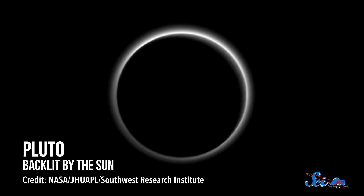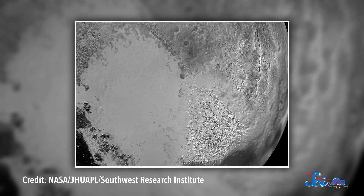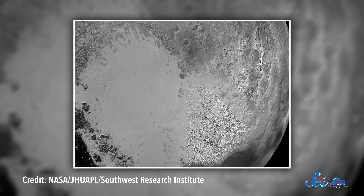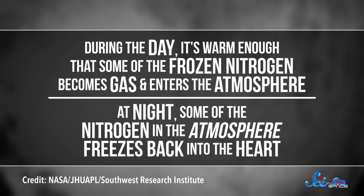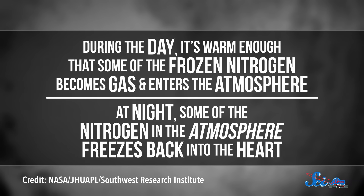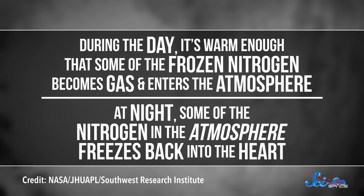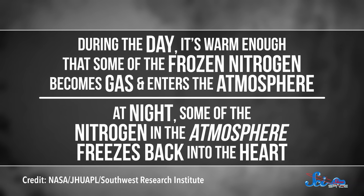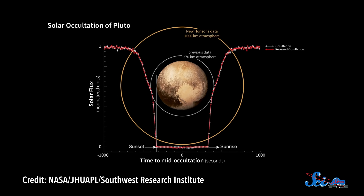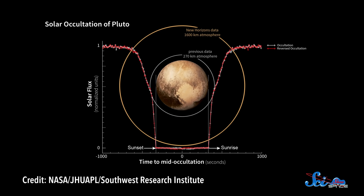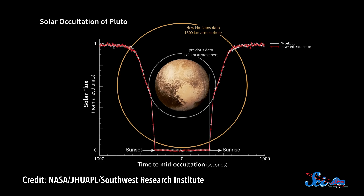Pluto's atmosphere is almost entirely nitrogen, and Pluto's heart — especially its left lobe, called Sputnik Planitia — is also mostly nitrogen, just frozen solid. During the day, it's warm enough that some of the frozen nitrogen becomes gas and enters the atmosphere, and at night, some of the nitrogen in the atmosphere freezes back into the heart. So on Pluto, you have this day-night cycle where the atmosphere gains and loses mass and pressure, which can create strong winds.